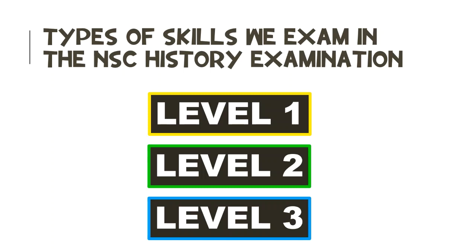They will then corroborate the evidence with other sources by focusing on similarities and differences. Once this is complete, they will use the information they have gathered to write an article, essay, thesis, or book about the historical event. All these skills will be examined in your NSC examination. There are three categories: Level 1 questions test your ability to extract evidence from sources; Level 2 questions test your ability to interpret evidence; and Level 3 questions test your ability to evaluate a source's reliability, usefulness, and limitations, as well as compare similarities and differences from various sources.